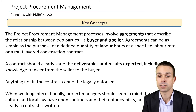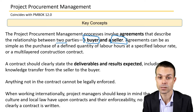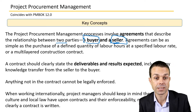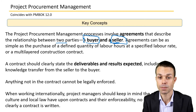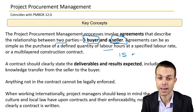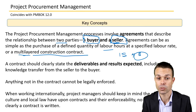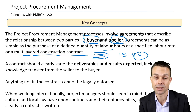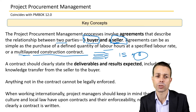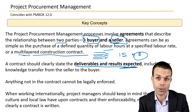We'll need expert judgment from the people in the organization who are able to sign and make those agreements. The procurement process involves agreements that describe the relationship between two parties: a buyer, who is buying the services, and a seller, who is providing them. Agreements can be as simple as a purchase of a defined quantity of labor — for example, 15 hours at a hundred dollars an hour — or as complex as a multi-layered construction contract delivering multiple deliverables.